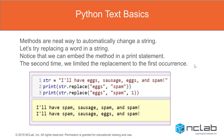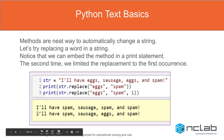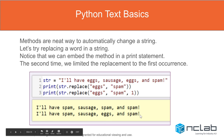Methods are a neat way to automatically change a string. When we're encoding or encrypting, we're changing what we have into something else. Let's try replacing a word in a string. We assign a text string to the variable 'str,' then use the replace command: print str.replace — in this case replacing the word 'eggs' with the word 'spam.' If we write it like this, all occurrences of 'eggs' are replaced with 'spam' — so we get 'I'll have spam, sausage, spam, and spam.' If we only want to replace one occurrence, we add a third argument telling it to just replace the first one — and we get 'I'll have spam, sausage, eggs, and spam,' with only the first occurrence replaced.